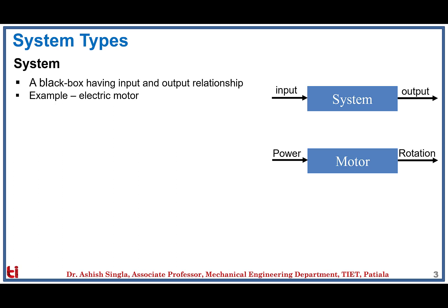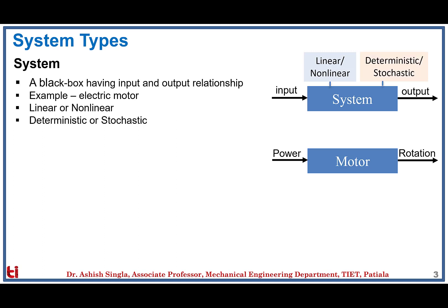Systems are further classified into linear or nonlinear systems based on the type of differential equation. They are also classified as deterministic or stochastic based on whether we are able to predict the behavior of the system. If we are able to predict the behavior of the system in the near future, that system is called deterministic. If we are not able to predict the behavior because of many parameters like friction, rain, falling leaves, number of vehicles on the road, or weather conditions, those are stochastic in nature where no specified model is available.